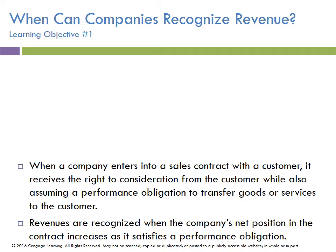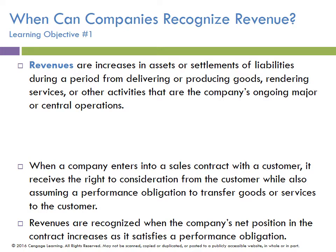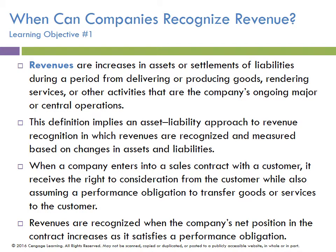When a company enters into a sales contract with a customer, it receives the right to consideration from the customer while also assuming a performance obligation to transfer goods or services. So there's two parts to the contract. Revenues are recognized when the company's net position in the contract increases as it satisfies a performance obligation. Revenues are increases in assets or settlements of liabilities like unearned revenue when the company delivers a product or service. This implies an asset or liability approach to revenue recognition, in which revenues are recognized and measured based on changes in assets and liabilities. However, we're looking more towards when the performance obligation occurs and the transfer of goods or services to a customer has occurred.